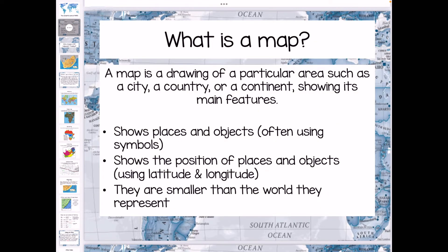So what is a map? A map is a drawing of a particular area, such as a city, a country, or continent, and it shows its main features. We can even get smaller maps, like a map of a mall or even a map of your school. A map shows places and objects, often using symbols, and it also shows the position of places and objects. We will definitely go into latitude and longitude in a future video, as that's something that is a little bit complicated for some people.